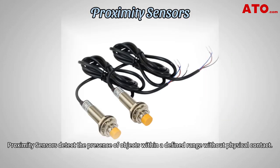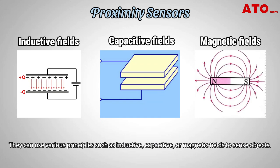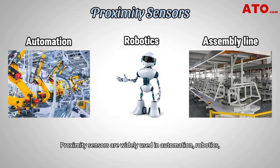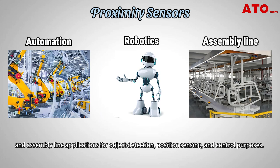Proximity sensors detect the presence of objects within a defined range without physical contact. They can use various principles such as inductive, capacitive or magnetic fields to sense objects. Proximity sensors are widely used in automation, robotics and assembly line applications for object detection, position sensing and control purposes.